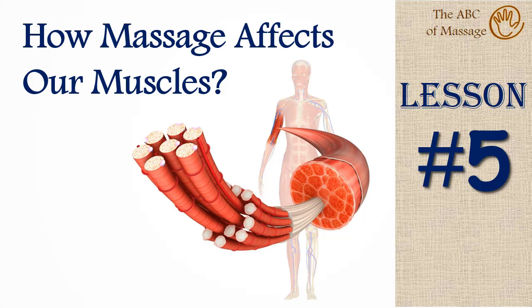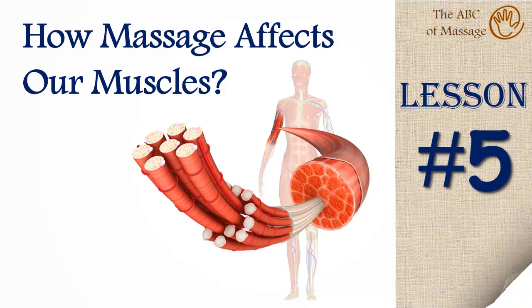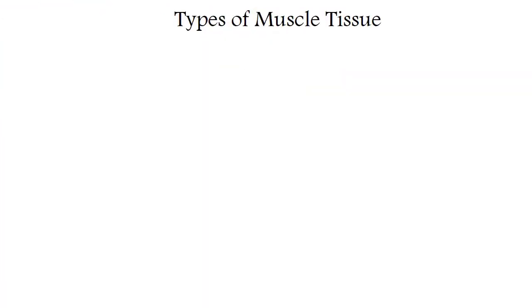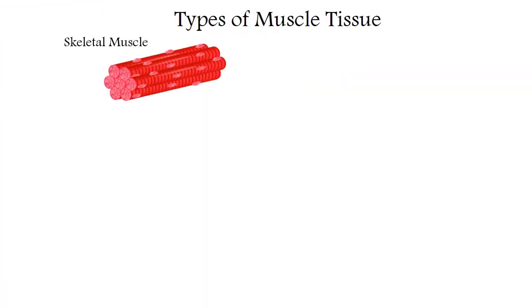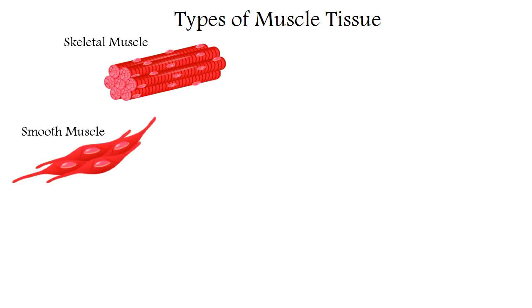Other types of muscle tissue during studies are often not even mentioned, but for decency a few words about them should be said. In our body there are three types of muscle tissue: skeletal, smooth and cardiac.